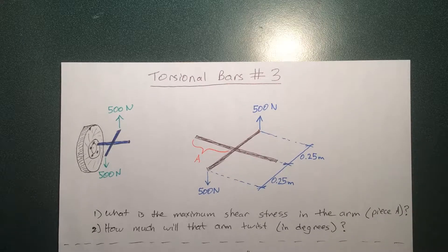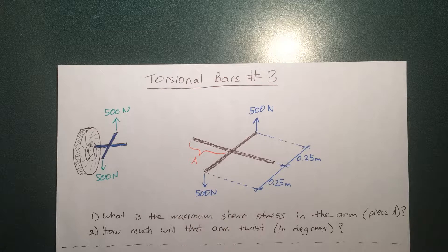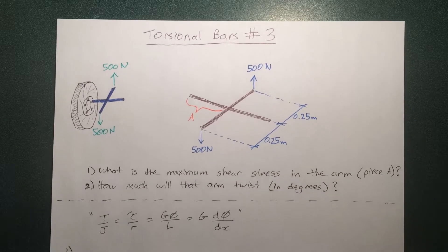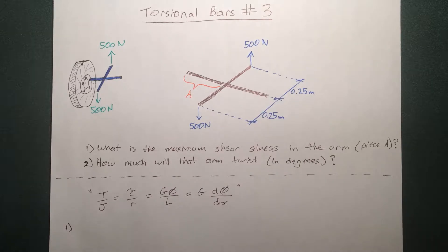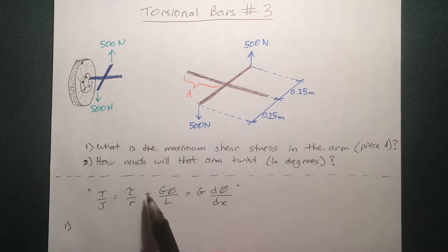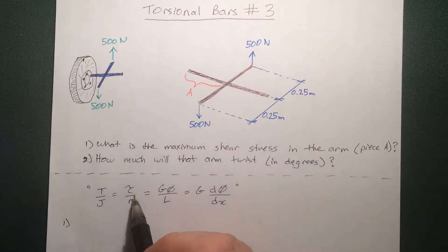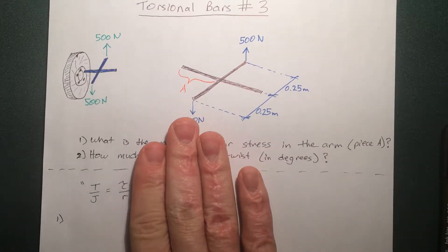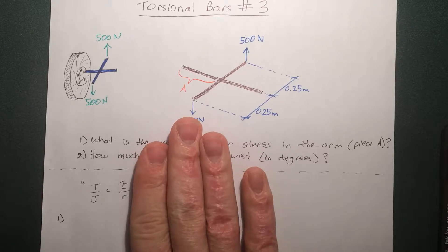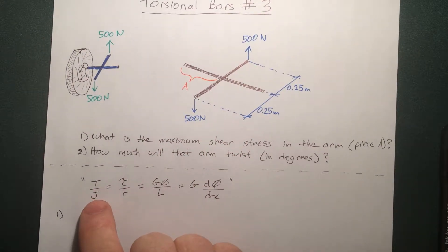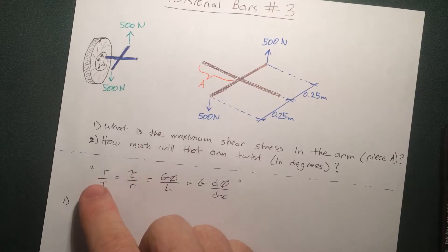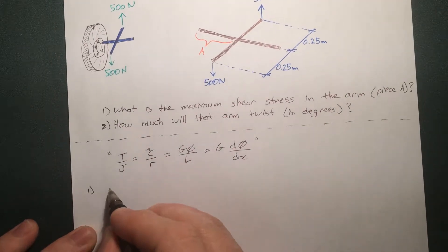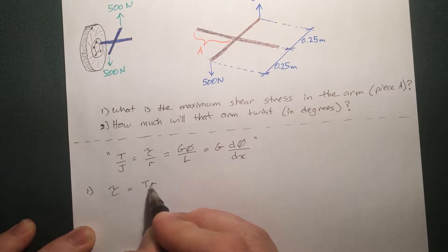The first thing that we need to do in order to find the shear stress is to define what shear stress is. We can use this series of equations here. The shear stress, we know, is given by this symbol here, this tau. We just need to solve that in terms of these variables. The shear stress is equal to the torque over the polar moment of inertia, and then the radius will also go to that side. So let's redefine that: shear stress is equal to TR over J.